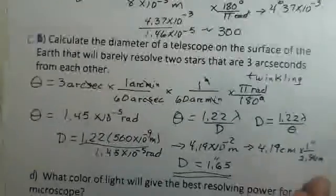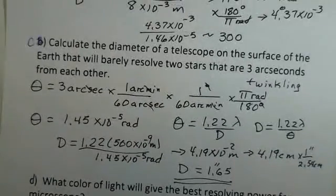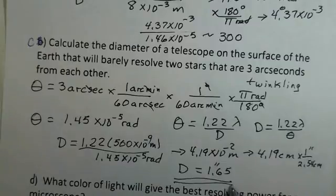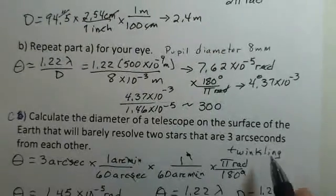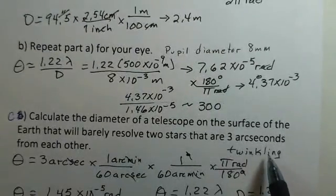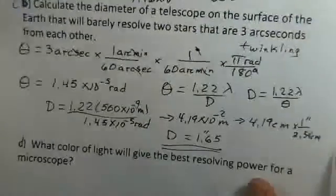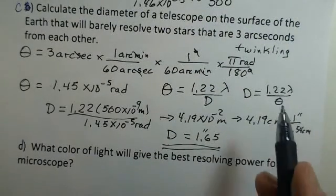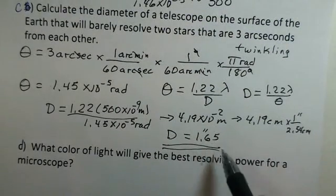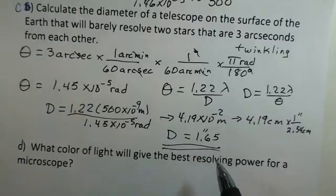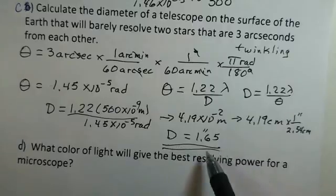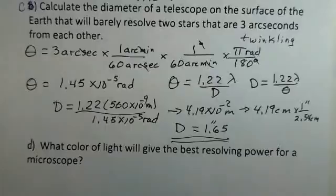You are not going to be able to see better details by buying a big telescope on the Earth if you cannot get to a place where the twinkling factor is less than 3 arc seconds. If you can get to a mountaintop and still air, then it's worth getting a bigger telescope in order to see details. Generally, it's worth getting a big telescope in order to see dim objects. That's the primary advantage for a telescope.